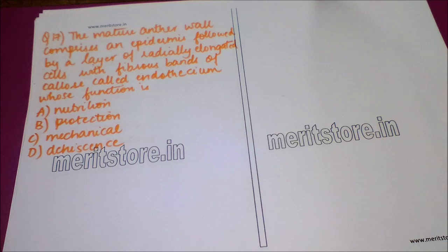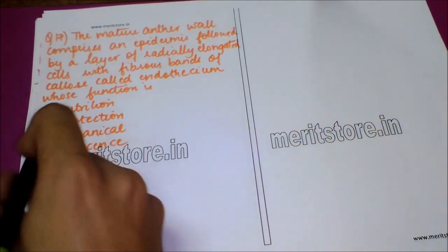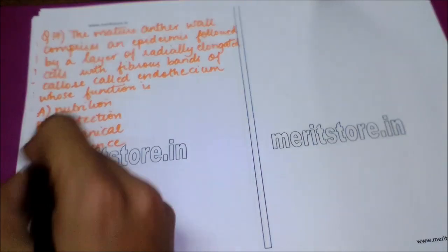The next question is: the mature anther comprises an epidermis followed by a layer of radially elongated cells with fibrous bands called endothecium. What is the function of the endothecium? Option A: nutrition. Option B: protection. Option C: mechanical. Option D: dehiscence. The correct answer is option D — dehiscence — as it helps in the drying and opening of the anther.